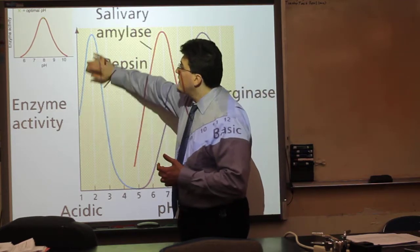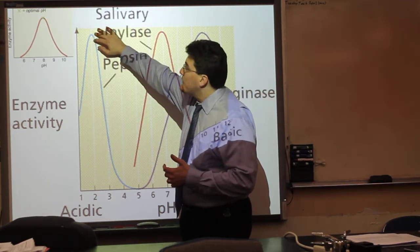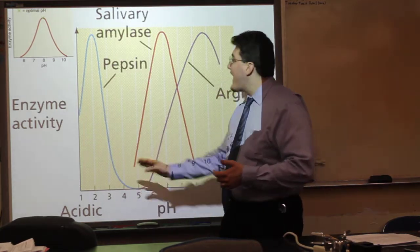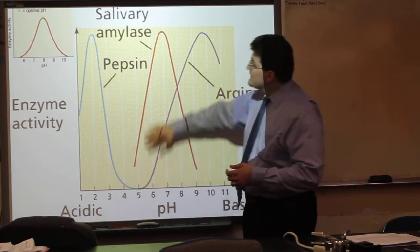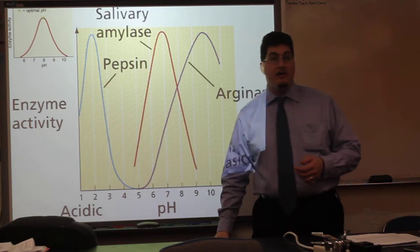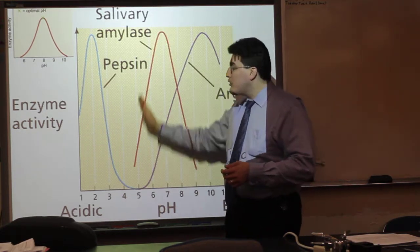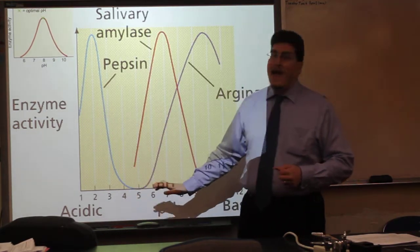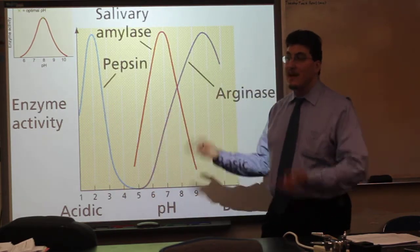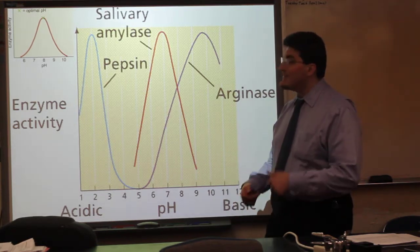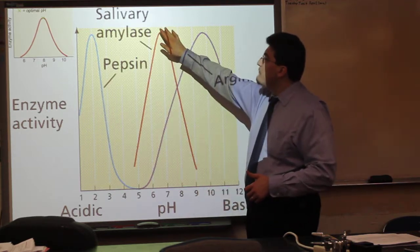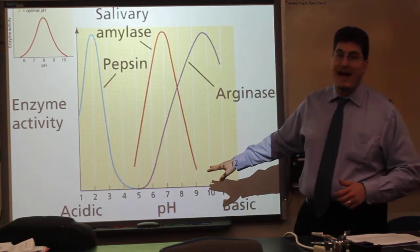Pepsin's rate of reaction increases until its optimal pH, then sharply declines until it no longer functions. Salivary amylase, by contrast, functions at neutral pHs like that found in saliva. Its rate of reaction decreases in more acidic conditions like the stomach, where salivary amylase is deactivated and denatured. It is also denatured and deactivated in more basic pHs.